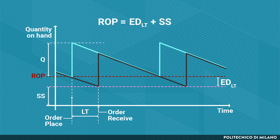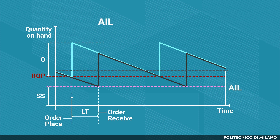This quantity allows indeed meeting the demand during the lead time — that is, during the time between the order issue and the order receipt — assuming a certain service level. Considering the average inventory level, it is equal to the sum of the average value of the safety stocks and the average value of the cycle stocks. Since in the reorder point model the cycle stocks range from 0 to Q, the average value of the cycle stocks is half the order quantity Q.